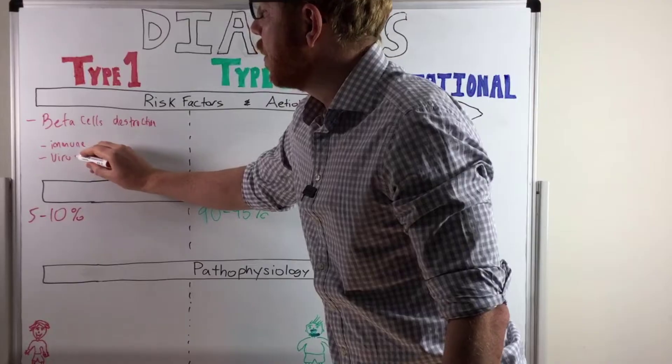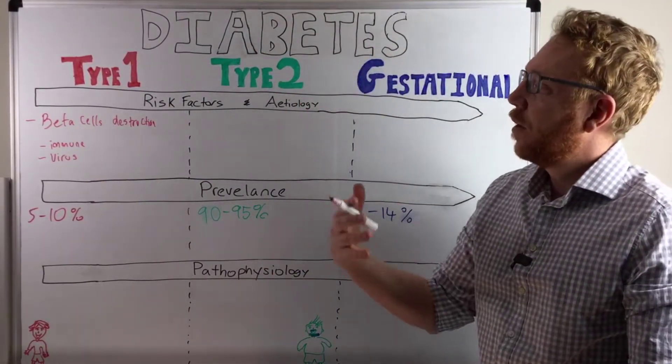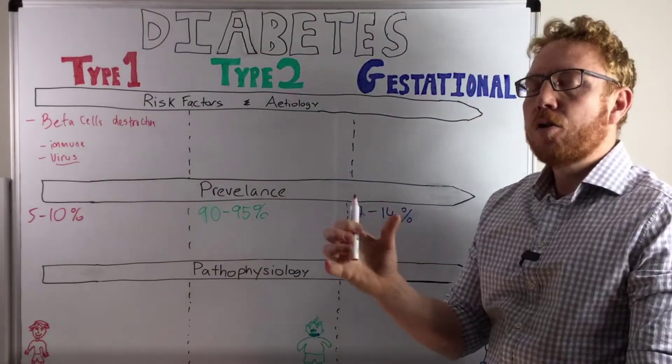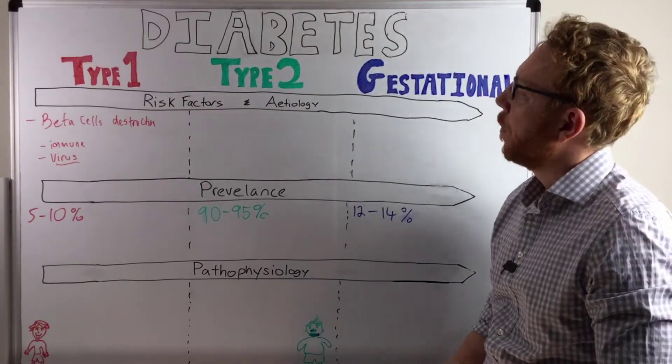Certain viruses may prompt the immune system possibly to then cause a destruction to beta cells, particularly the virus that seems most closely linked, enteroviruses, so viruses within the intestines.